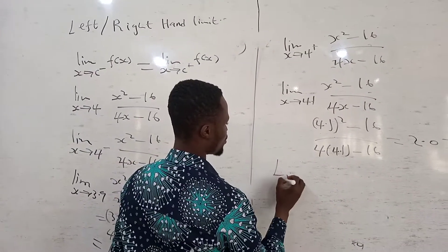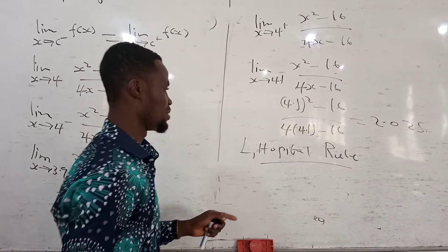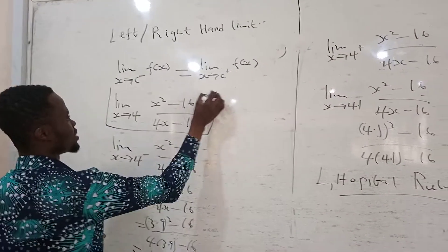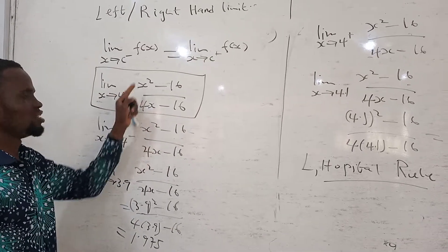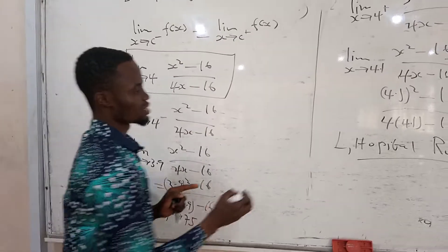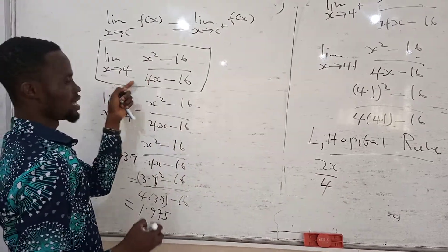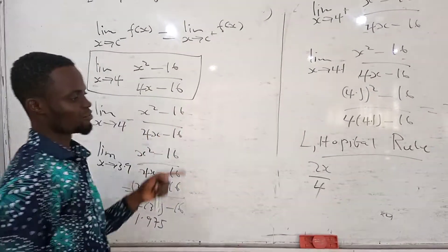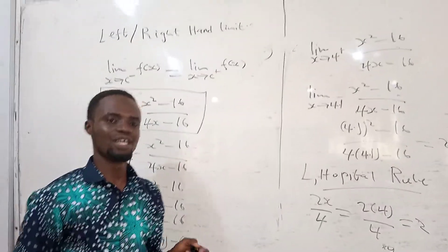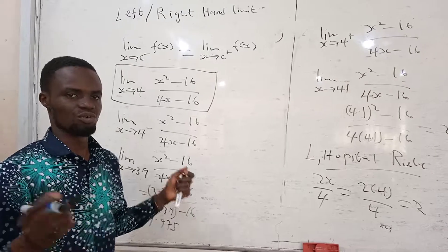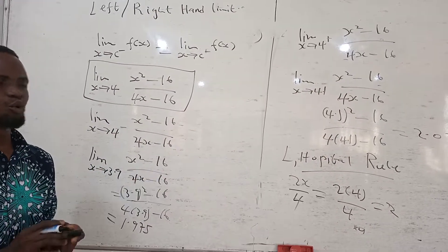You can also use L'Hôpital's Rule for this. When you differentiate the top and the bottom separately: differentiating x squared minus 16 gives 2x, and differentiating 4x minus 16 gives 4. Then you substitute the limit value, which is 4, giving 2 times 4 divided by 4, equal to 2. L'Hôpital's Rule always gives you the exact answer, not just an approximation.